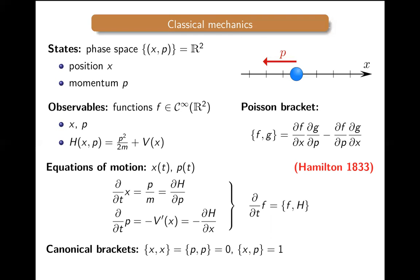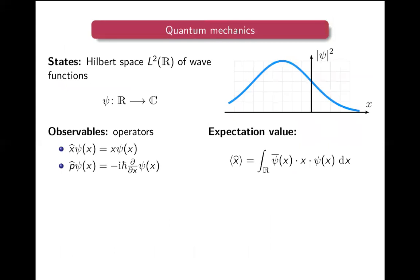Now what would be the quantum description of such a system? In the position description of quantum mechanics, the state is described by a wave function — a function ψ on the real line with complex values. The state space is actually a Hilbert space of square-integrable functions of this type. You should imagine them as a kind of probability distribution that tells you how likely it is to find a particle in a certain place.